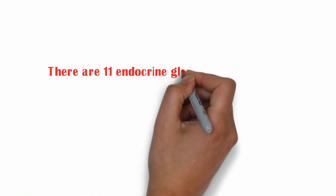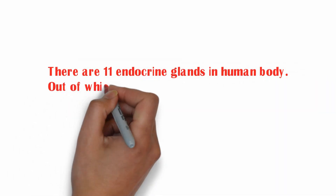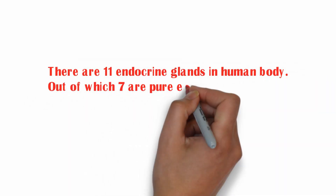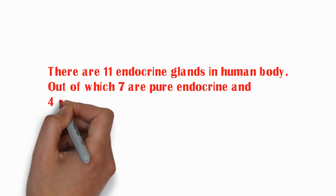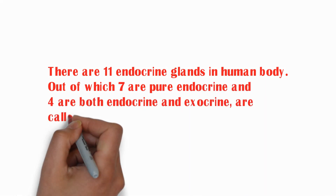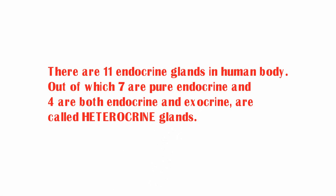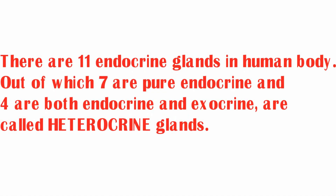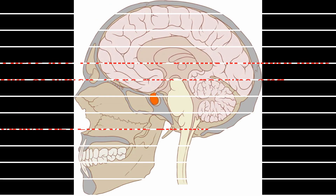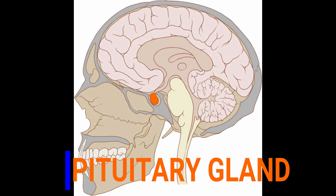There are 11 endocrine glands in the human body, out of which 7 are pure endocrine and 4 are both endocrine and exocrine, so called heterocrine. Let us have the 11 glands.